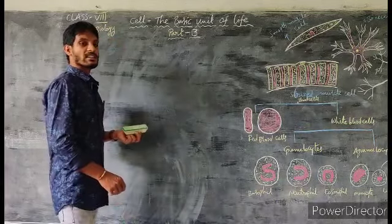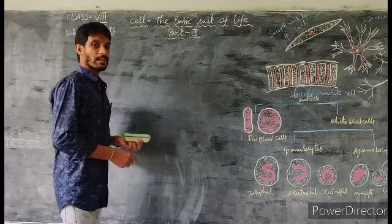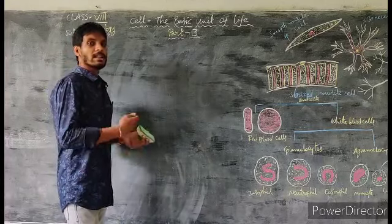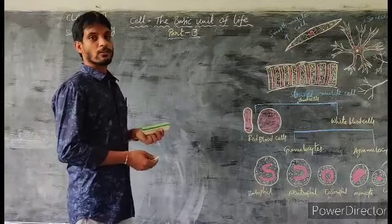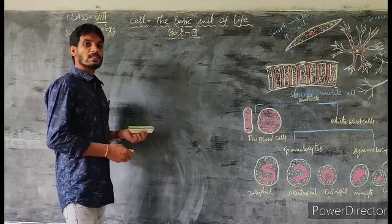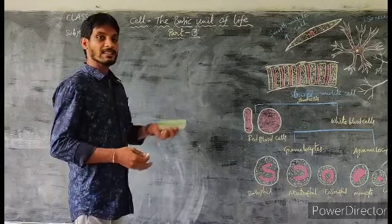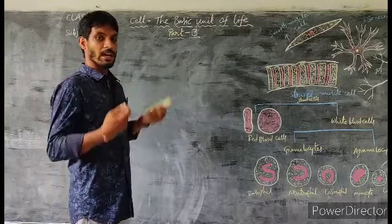All the cells are surrounded by a membrane called cell membrane. Inside the cell, it is filled with a fluid-like substance called cytoplasm. Different types of parts are present in the cell, just as we have different parts in our body — they are called cell organelles. Cell is called the basic unit of life because the life of every living organism starts with a single cell.